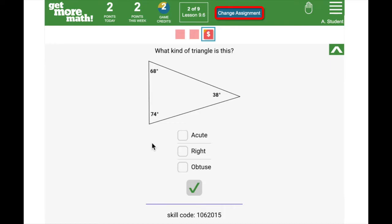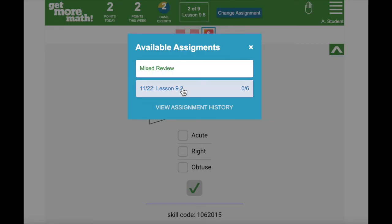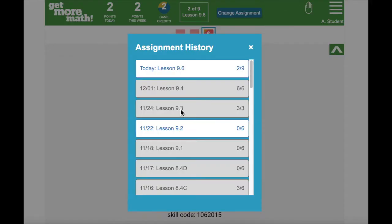By using the change assignment button I also have the opportunity to switch to any incomplete assignments or to switch to mixed review depending on what my teacher has allowed me to have access to. You can also go to your assignments history to see past assignments.